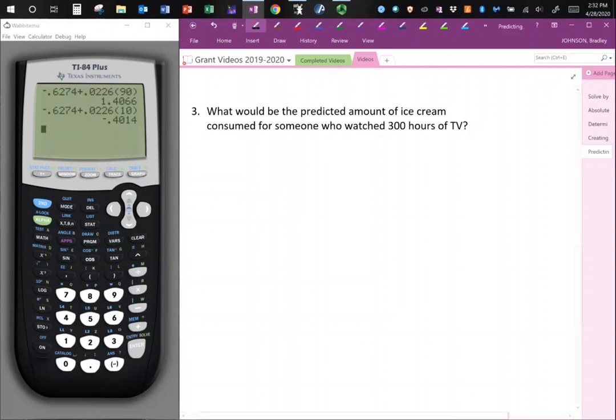So what would be the predicted amount of ice cream consumed for someone who watched 300 hours of TV? So I'll put in y hat and I will put negative 0.6274 plus 0.0226 times and 300 now goes in the place of x, right? x relates to the TV hours.